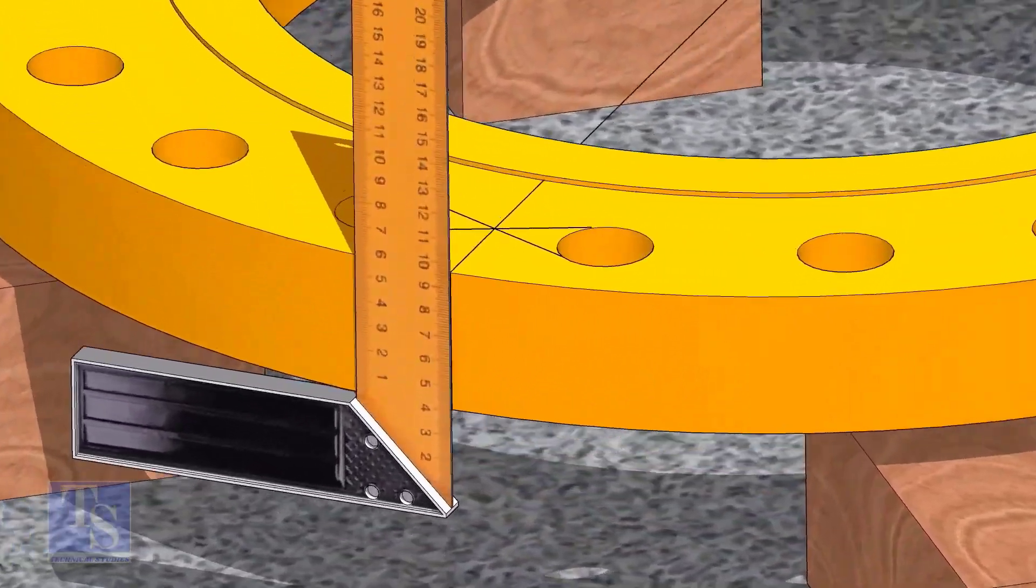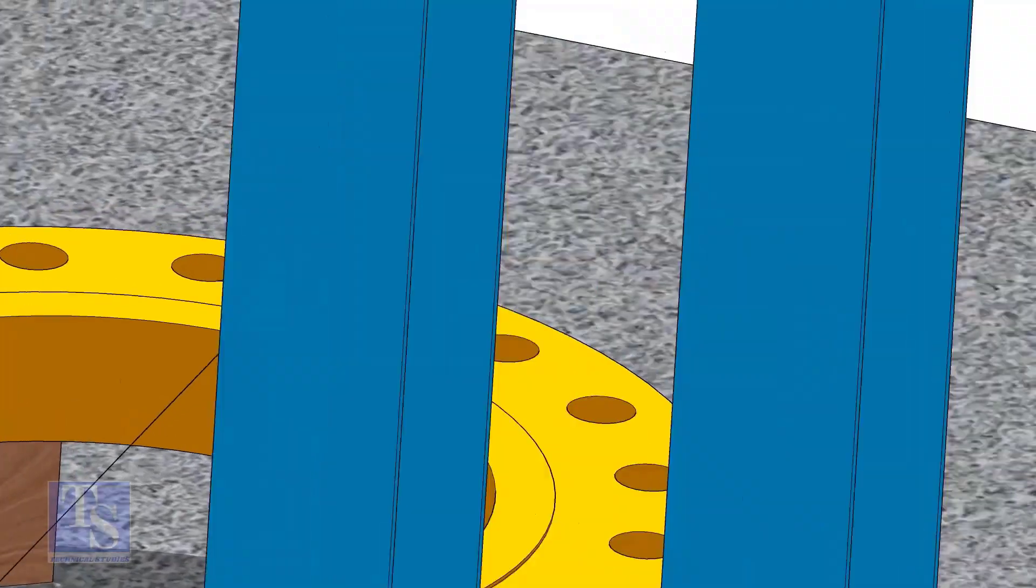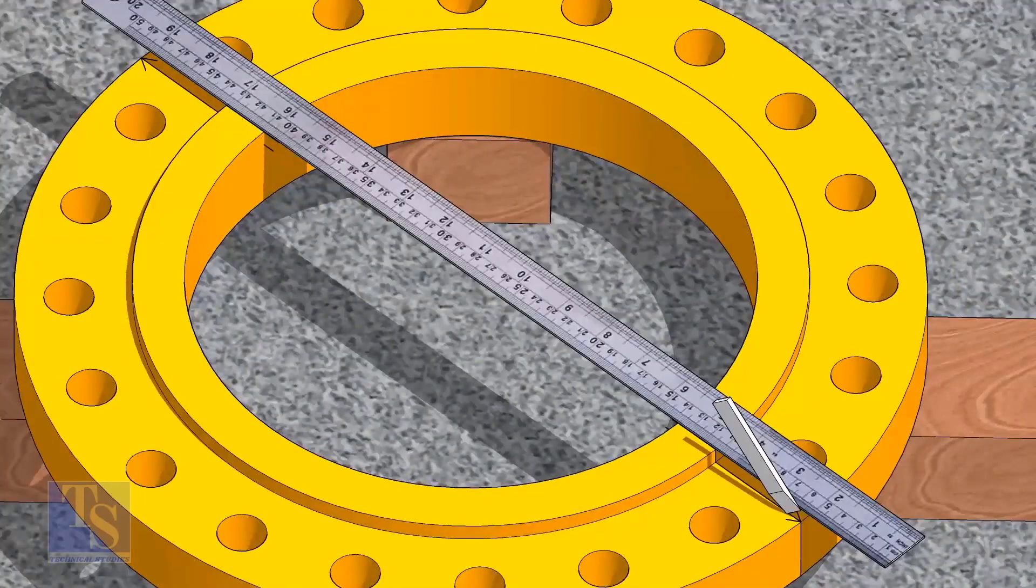Draw the center line of the flange as shown. Now, transfer the center line to the sides of the flange. Overturn the flange and transfer the center line on the back side of the flange.